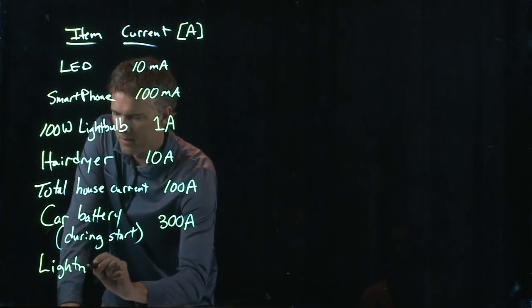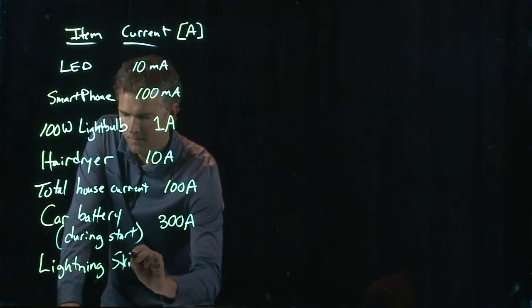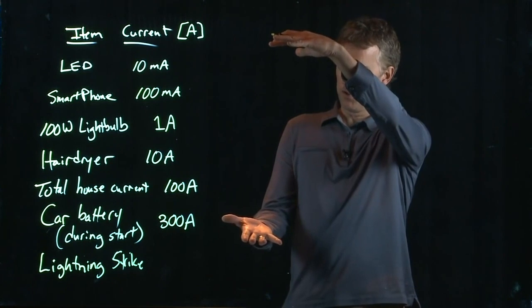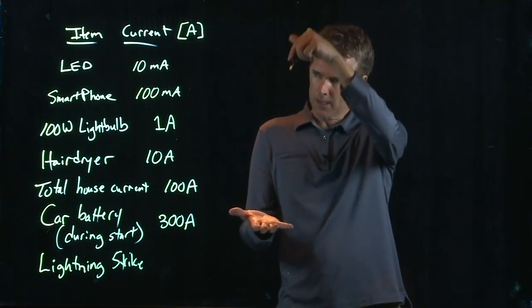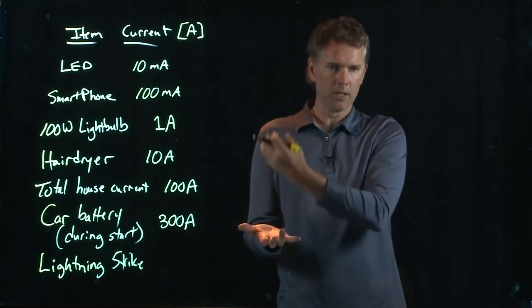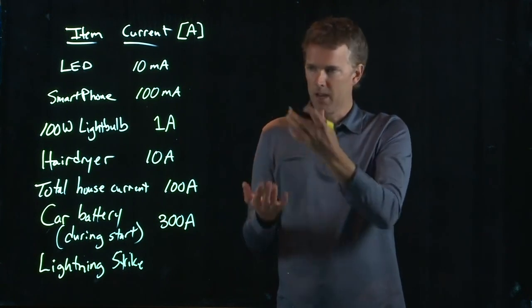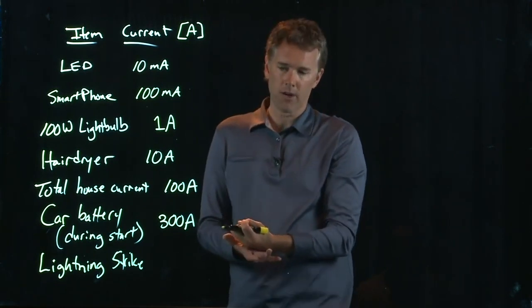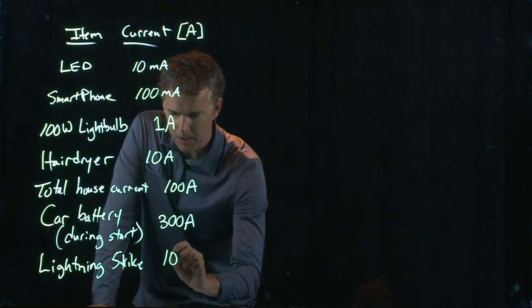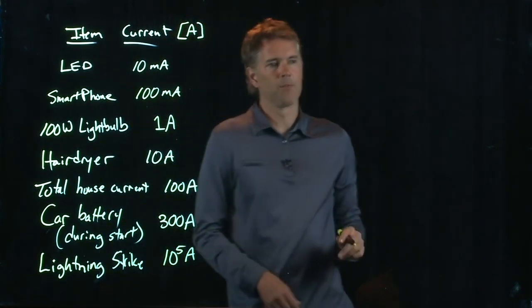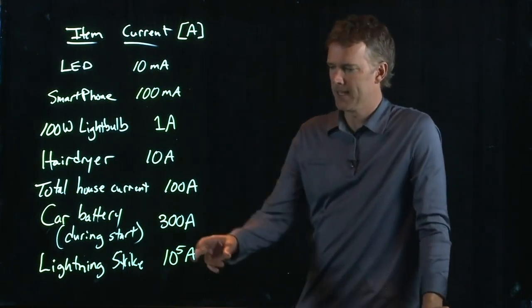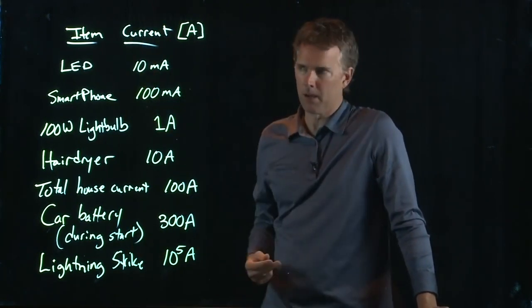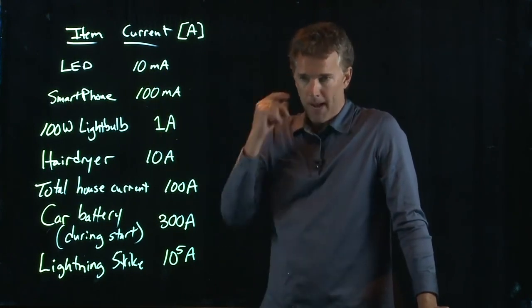Let's get to something really big. Lightning strike. A lightning strike is when there's a big voltage difference between the cloud and the ground, so much so that the electric field strips the electrons off of the molecules that are floating around in the air, all the nitrogen, the oxygen, the carbon dioxide, and it creates this huge amount of current. And that's what we see as a lightning strike. And that can be a hundred thousand amps up to a million amps. 10 to the five to 10 to the six amps. So this is the sort of scale of things that you're talking about. We've got eight orders of magnitude here.